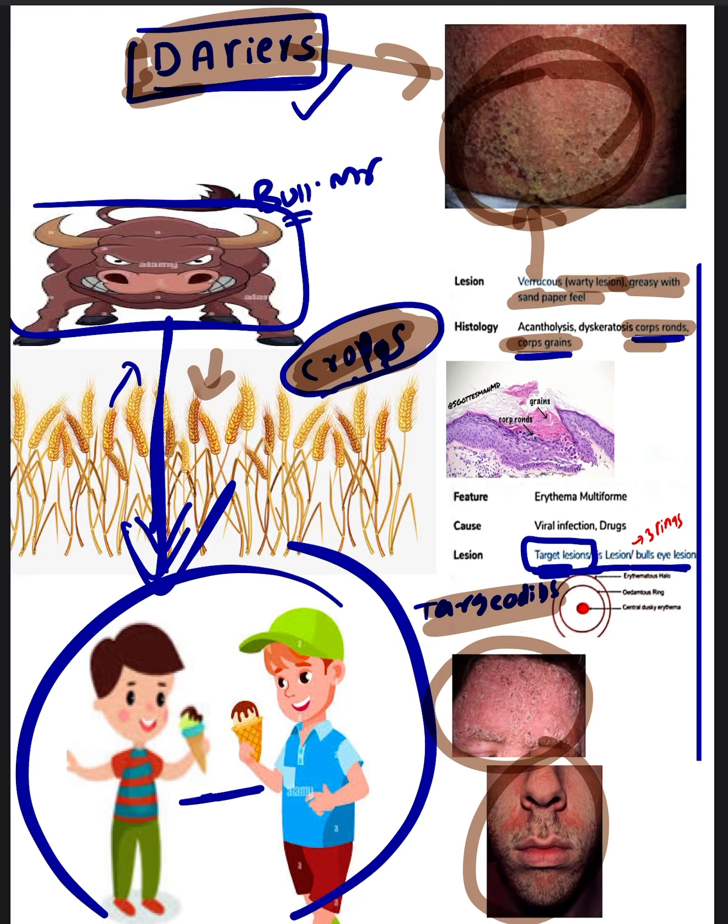This bull targets this boy, so target lesions or bullseye lesions will be seen in Darier's disease, whereas targetoid lesions are seen in Hailey disease. By this, you can differentiate if this is Darier's disease or Hailey disease.